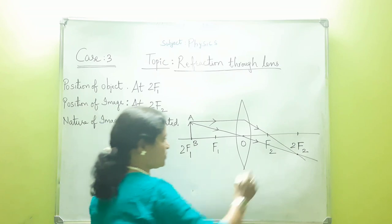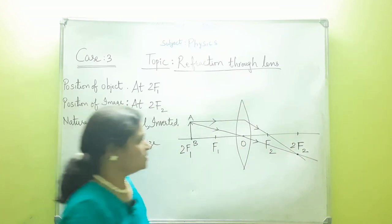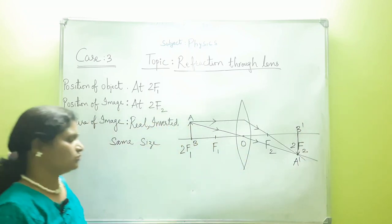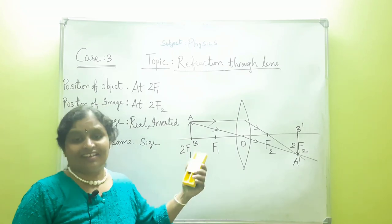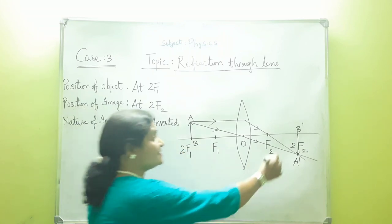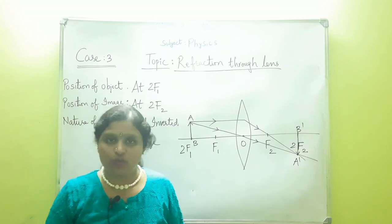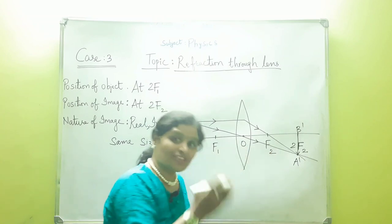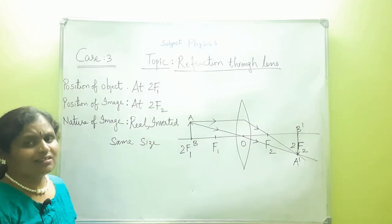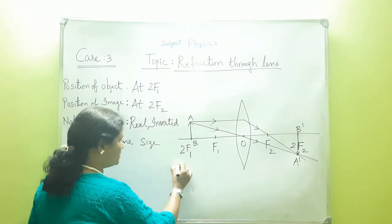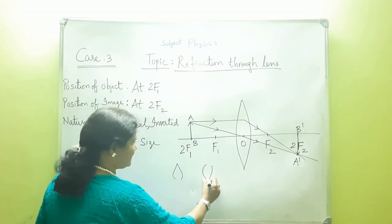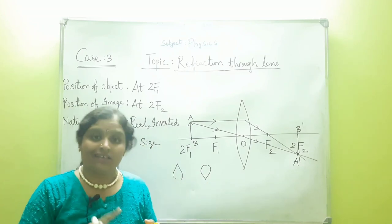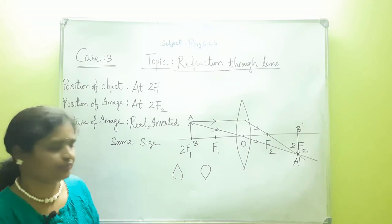The image A'B' is drawn at that point of intersection. In case 3, the object is placed at 2F1 and the image is formed at 2F2, and the nature of the image is real and inverted. The refracted rays actually meet, so a real and inverted image is formed, and it is the same size as the object. For example, if the candle flame is of a certain size, the image will also be of the same size but inverted.